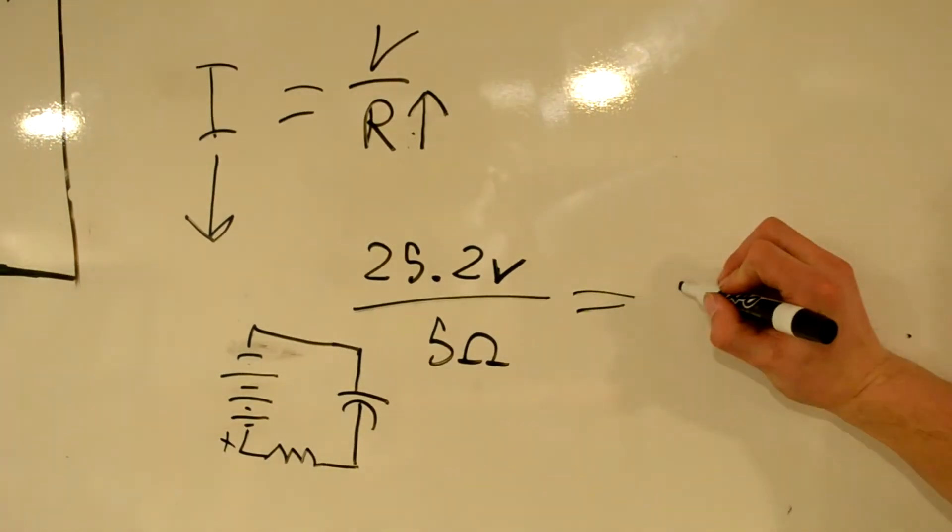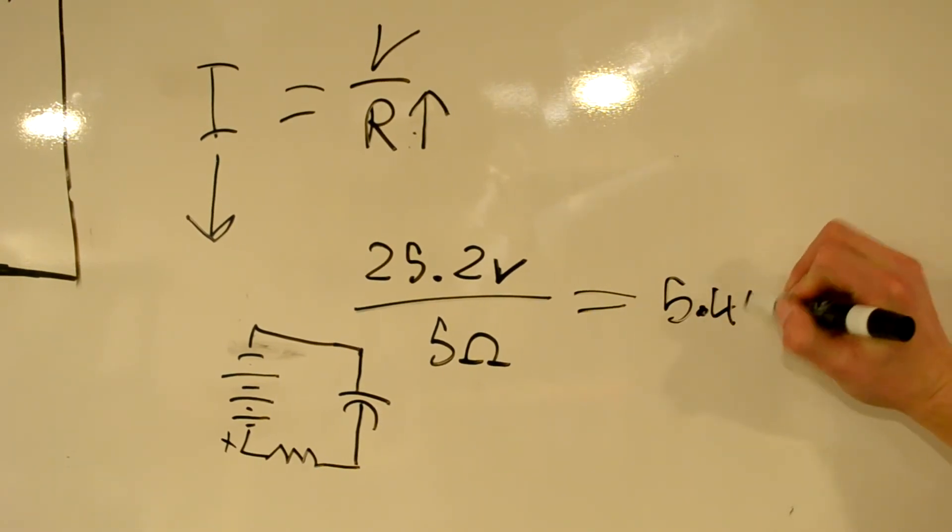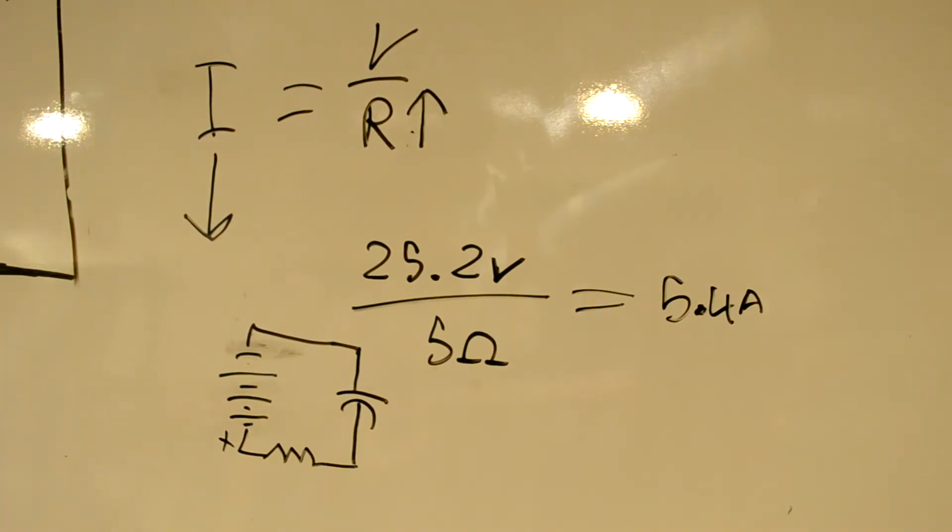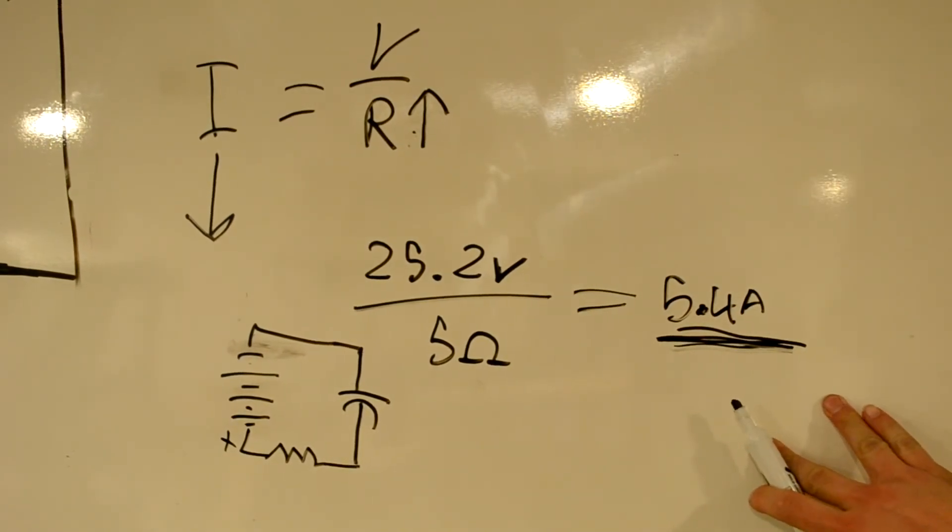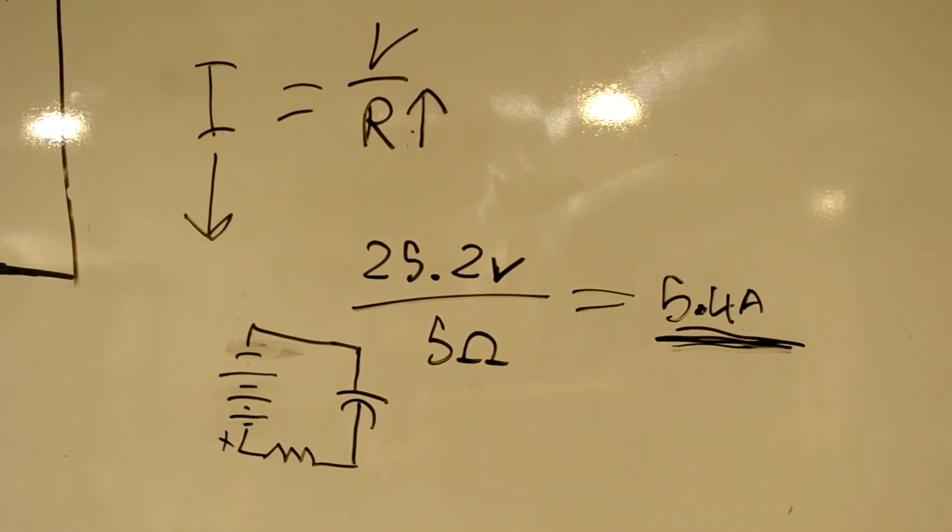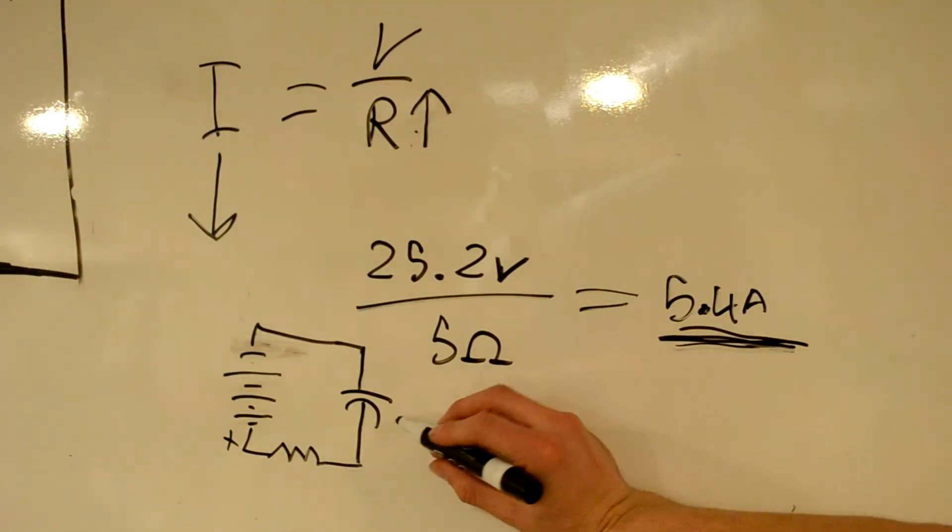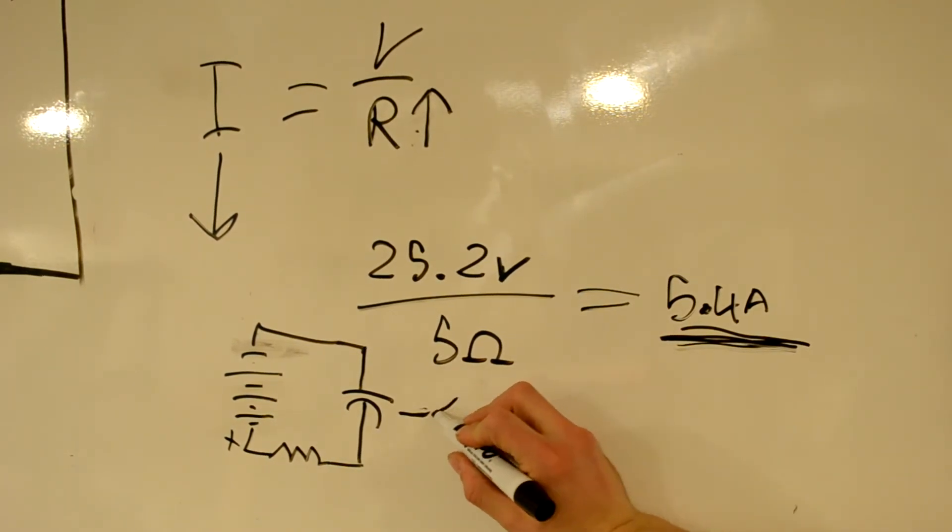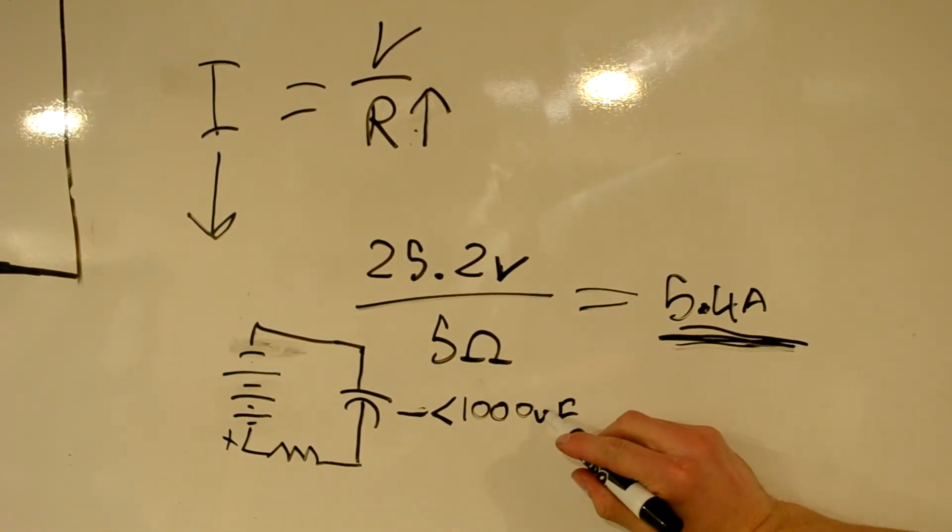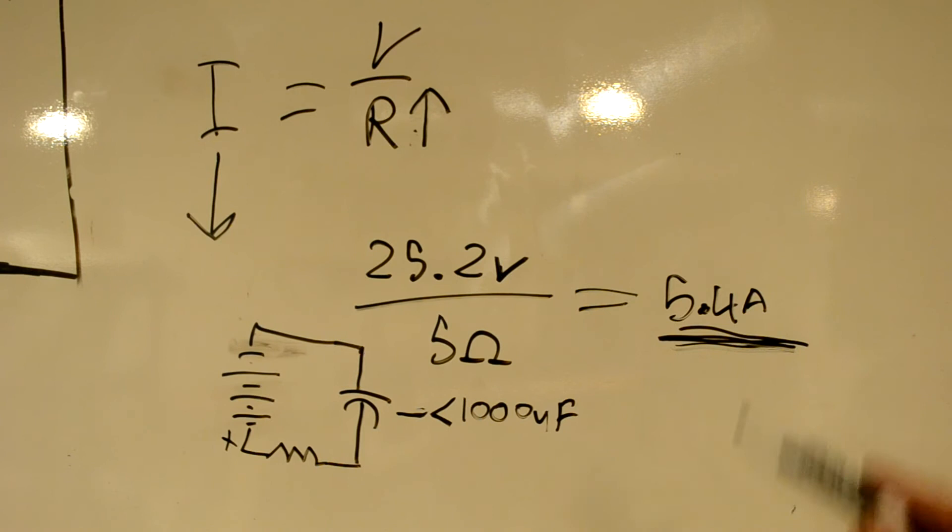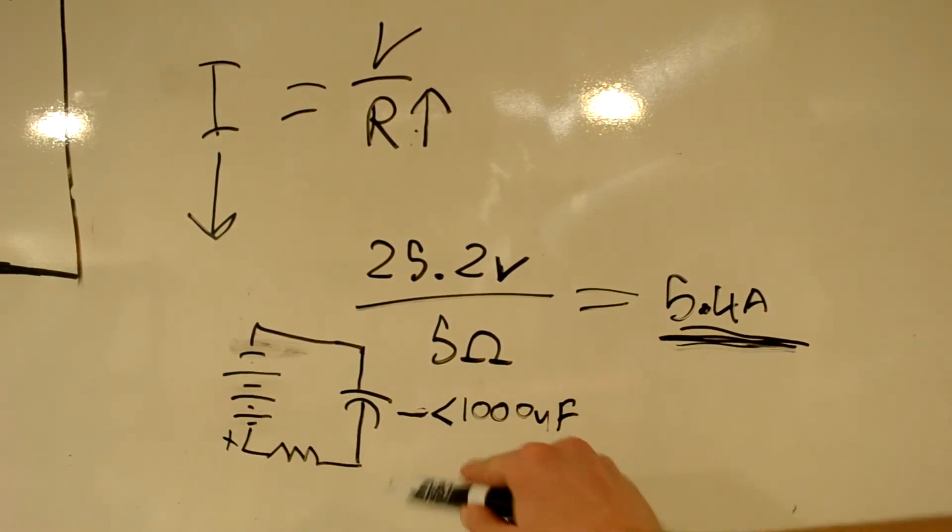So that gives us 5.4 amps, significantly, significantly more reasonable. Will not produce any noticeable sparks. Will not pit or damage our connectors. And if we're using pretty standard capacitor values for a speed controller, such as this being less than 1,000 microfarads.